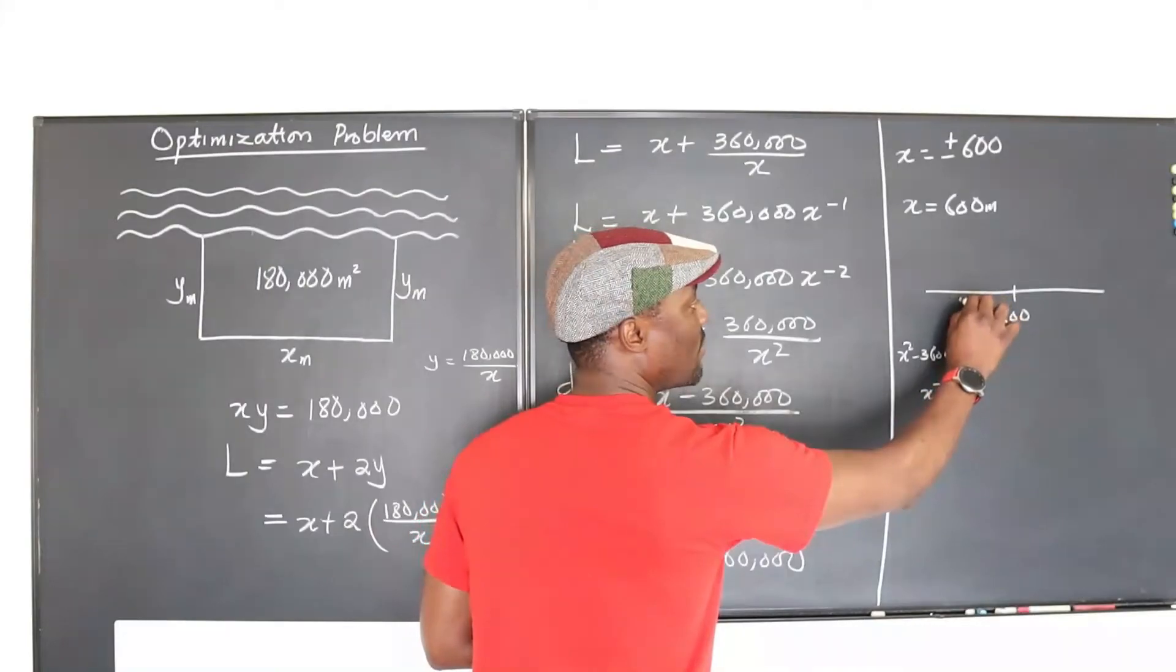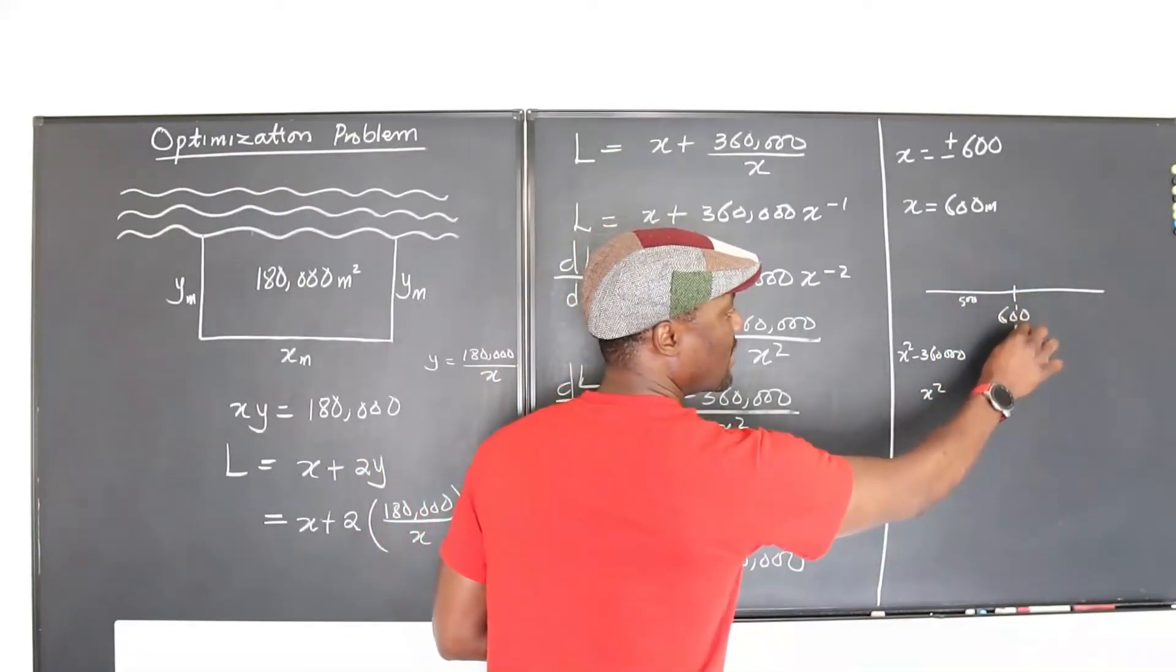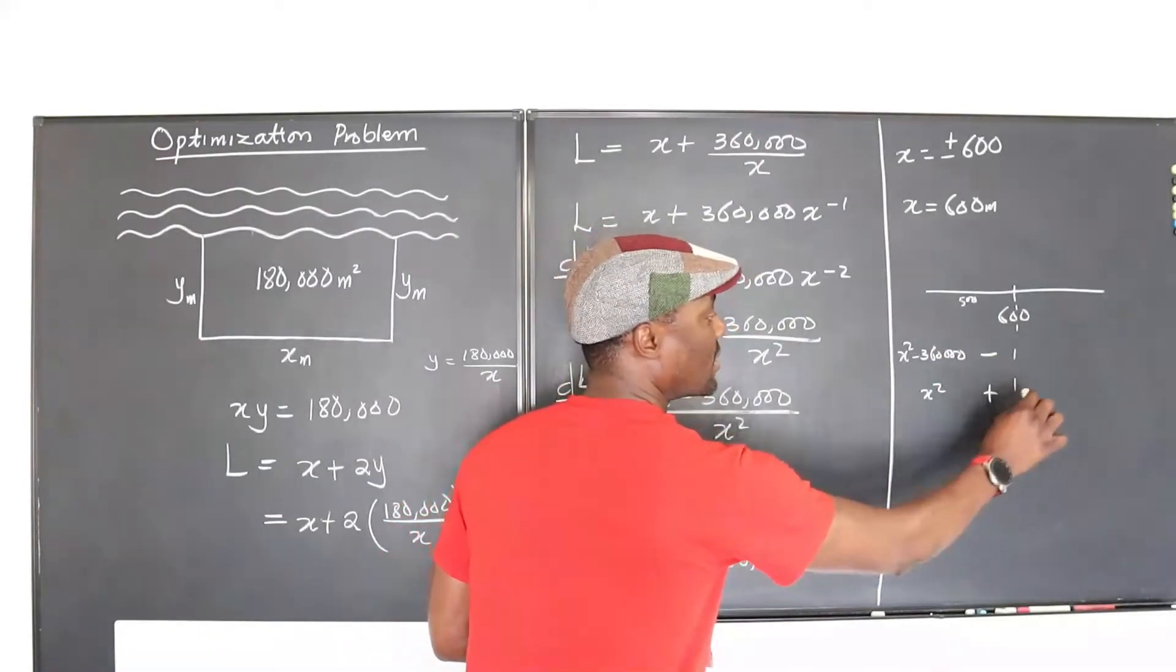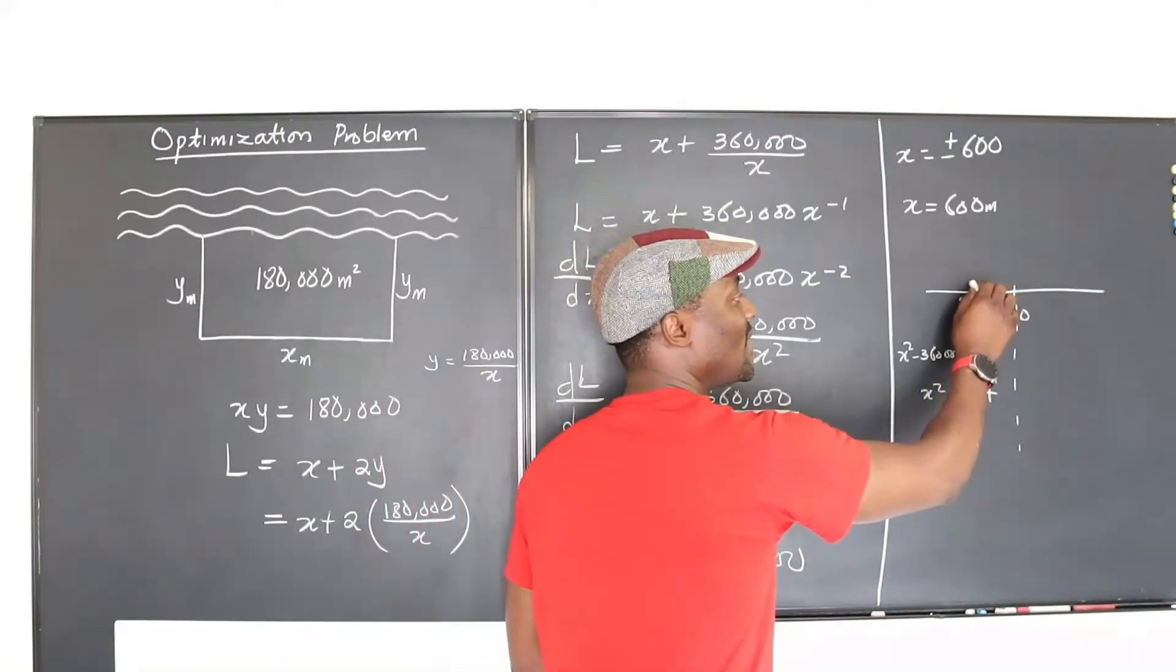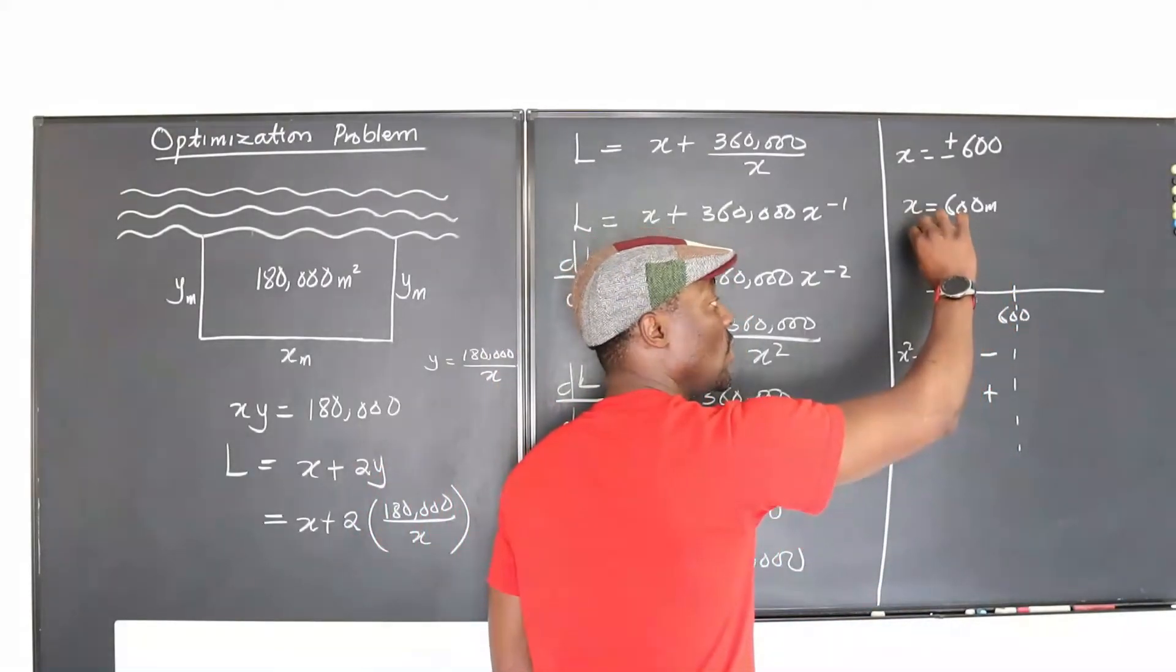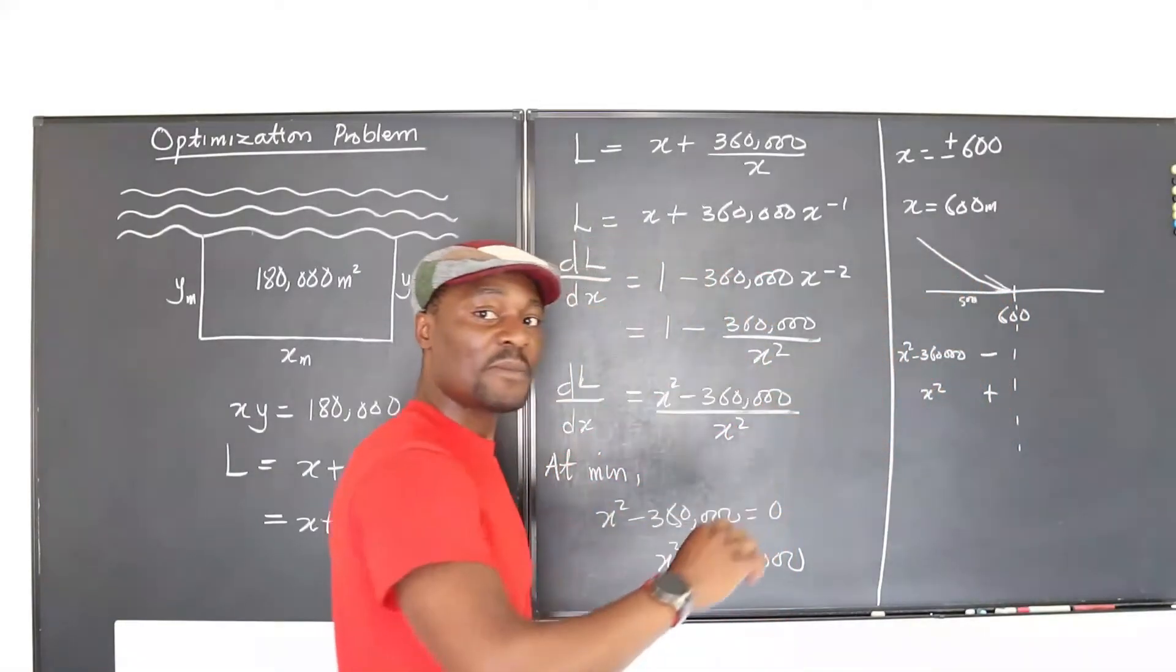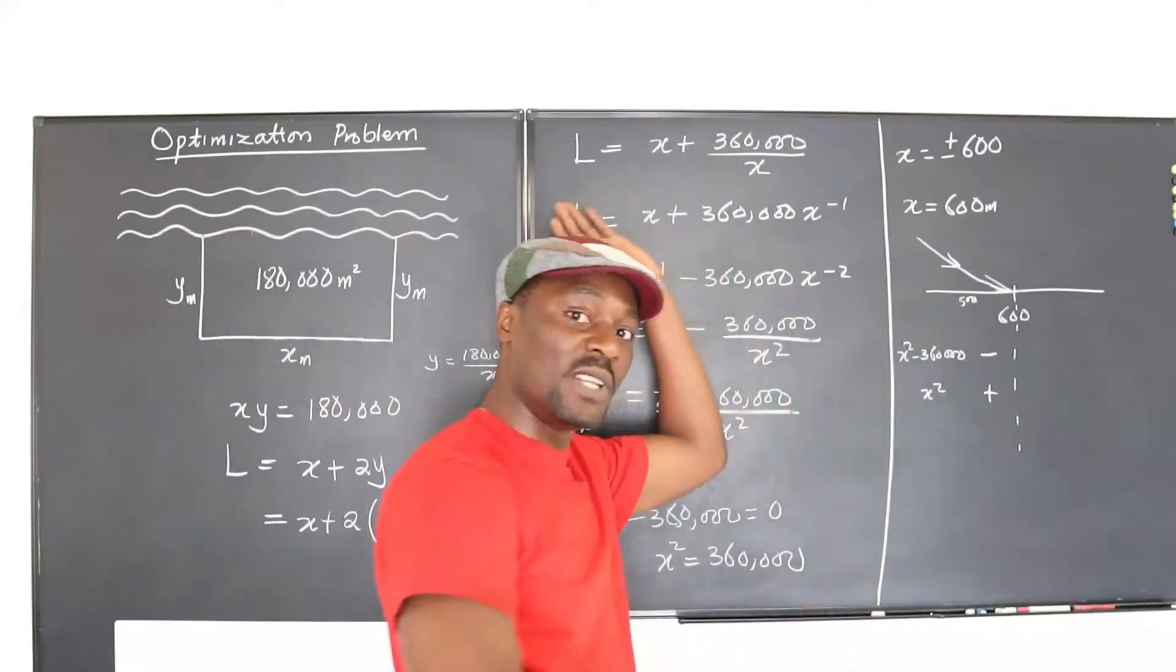If you plug in 500 here, your answer at this point is going to be negative, and this is going to be positive. A combination of negative and positive will be negative. So this area is negative, which means the slope of this curve is like this—it's coming down. That's why it's negative. Slopes to the left.